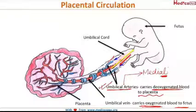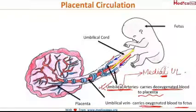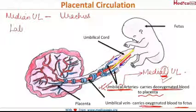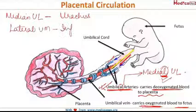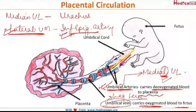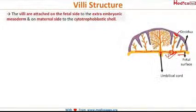The umbilical arteries obliterate to form the medial umbilical ligament. Note the word 'medial' carefully — we also have a median umbilical ligament, which is formed as a remnant of the urachus, and a lateral umbilical ligament formed from obliteration of the inferior epigastric artery. The umbilical vein obliterates to form the ligamentum teres.